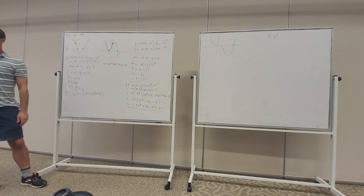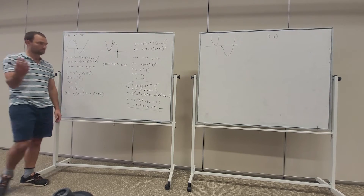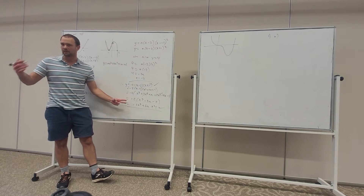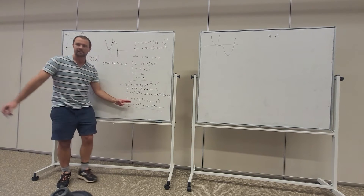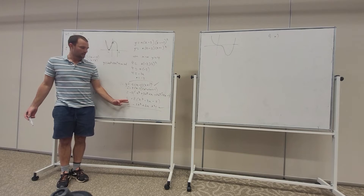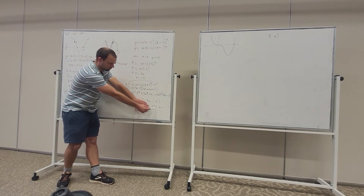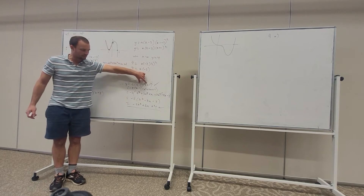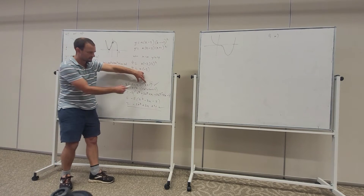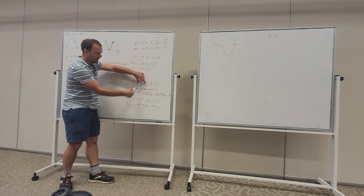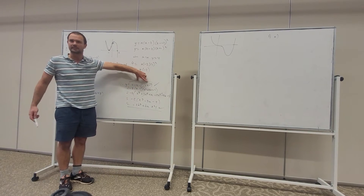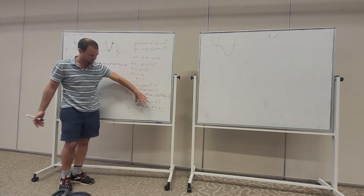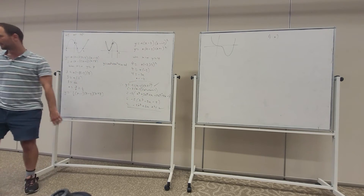So what have we done? The function we started with and this function in general form are the same thing — they're just different ways of representing the cubic. If you graph this in general form or in fully factorised form, they're both going to look the same. From the general form you can see two things directly: firstly that it is a cubic — the leading degree is to the power of 3 — and the y-intercept is 4. The factorised form is particularly useful because it tells us it cuts the x-axis at 2 and touches at minus 1 — so this tells us the roots, the x-intercepts, the zeros, the factors.